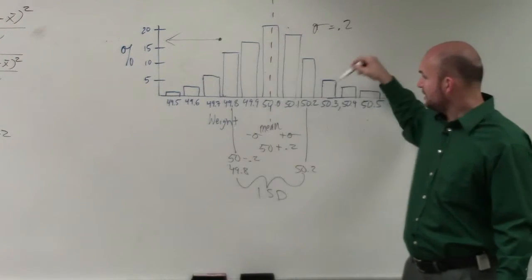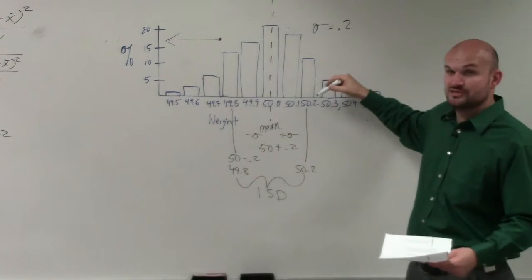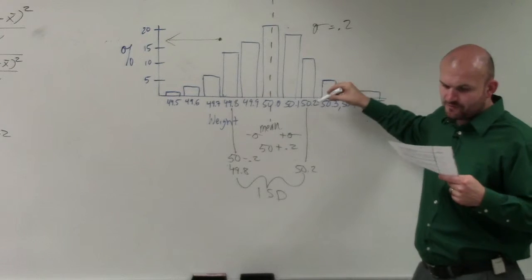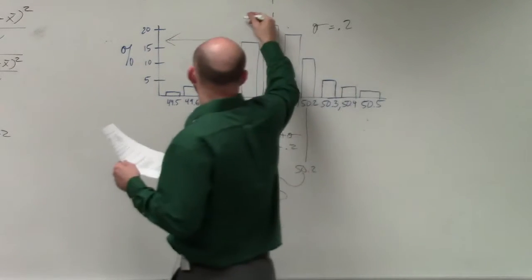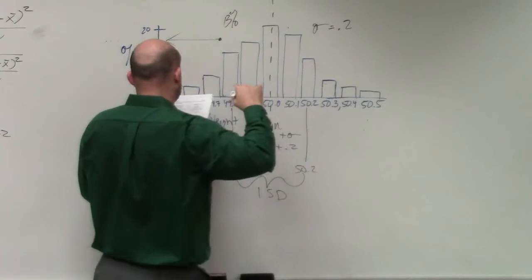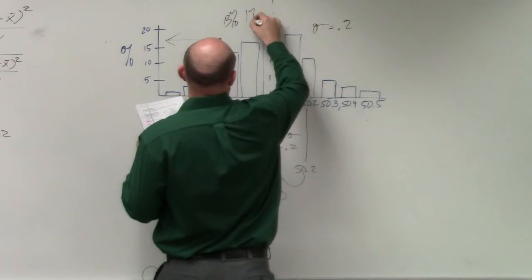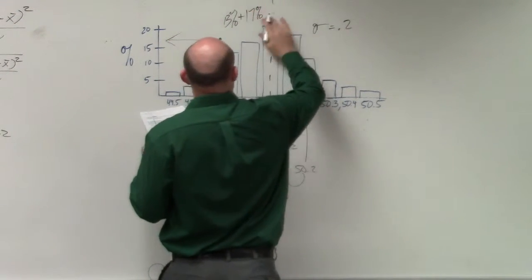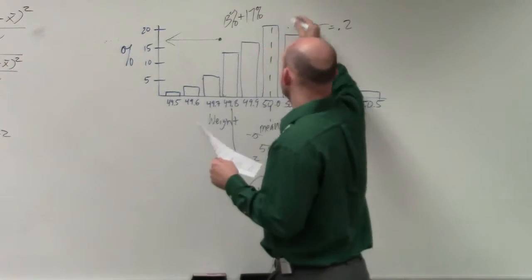So it's between 49.8 and 50.2. So we need to add all these percentages up. So at 49.8, it looks like I'm at 13%. At 49.9, it looks like I'm at 17%. At 50, I'm at 20%.